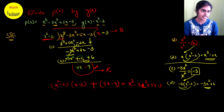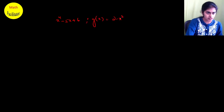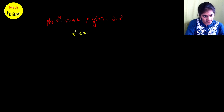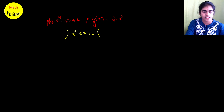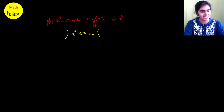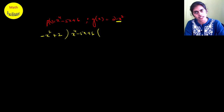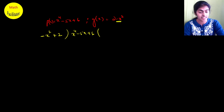Let's take one more example. Suppose P(x) = x⁴ - 5x + 6 and G(x) = 2 - x². Here P(x) is already in order, but G(x) is not — the constant comes first. So rearrange G(x): write the x² term first with its sign, giving -x² + 2. Be careful: the x² term has a negative sign, so write it as -x² + 2.